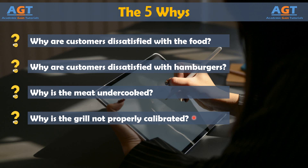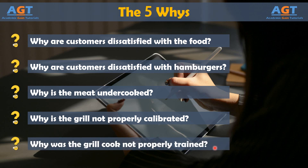Now the team has a specific cause and a solution: train the grill cook. In a Six Sigma environment, the team might move on with one more question — why was the grill cook not properly trained? This might lead to the development of a consistent training policy so the problem doesn't occur the next time a new grill cook is hired. In the hamburger example, it only took four why questions to get to the root of the problem, and a fifth question started pointing to controls or long-term solutions.